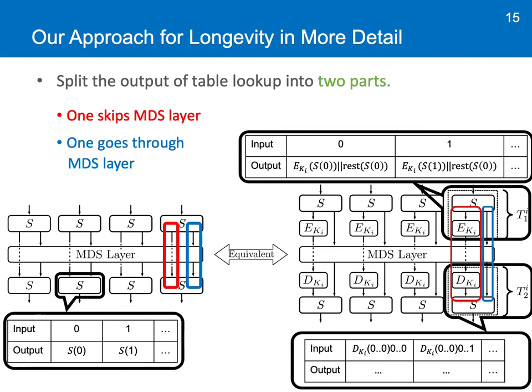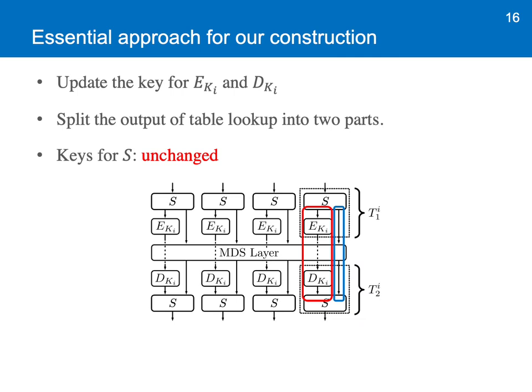Also, even after updating the key KI for EKI and DKI, the functionality remains equivalent. So the essential approach is to update key KI for EKI and DKI so that it can update tables TI1 and TI2 and keep the same functionality. In addition, in order to maintain the same functionality, we split the output into two parts. One part goes through EKI and then directly goes to DKI, and the other part goes through the MDS layer and goes to another table lookup. What's important is that the key of the underlying cipher for S remains unchanged. These approaches help to keep the same functionality.